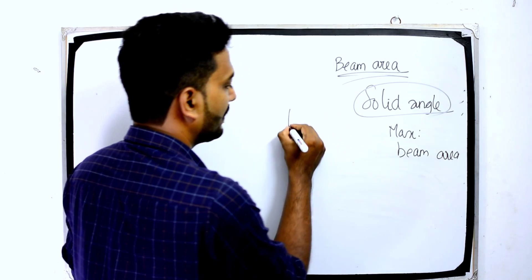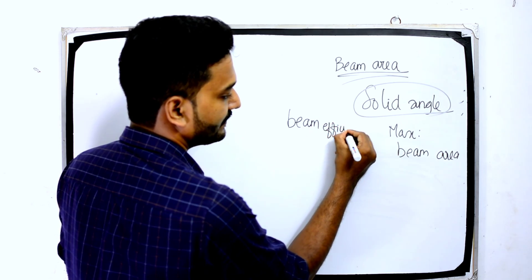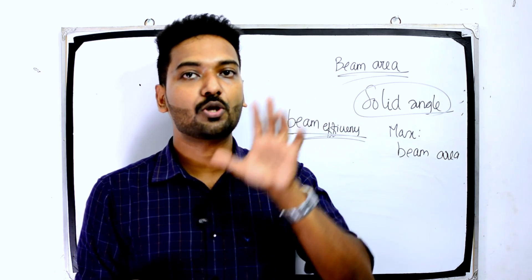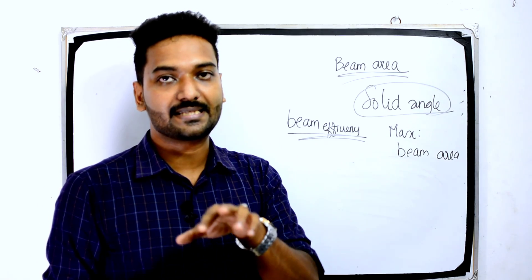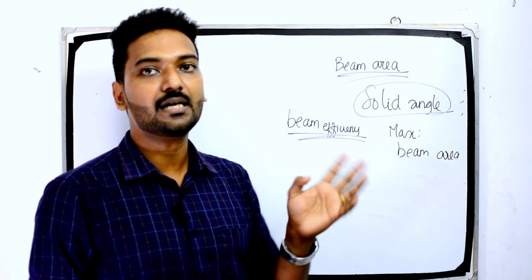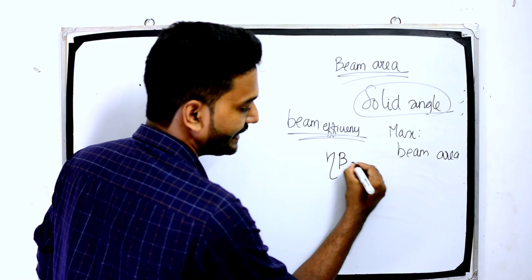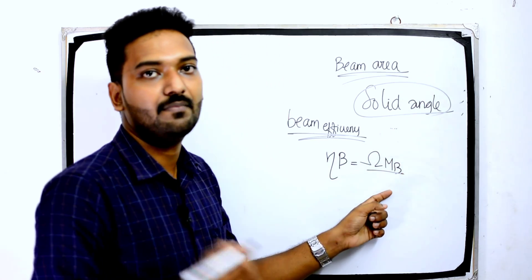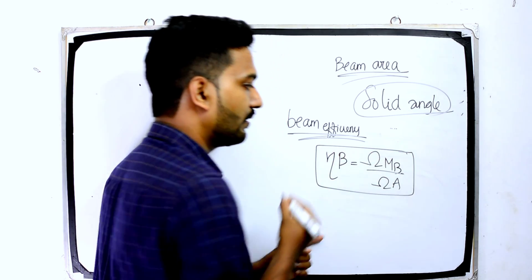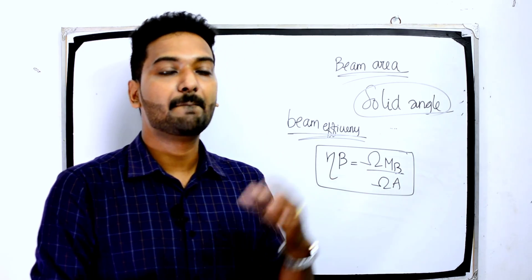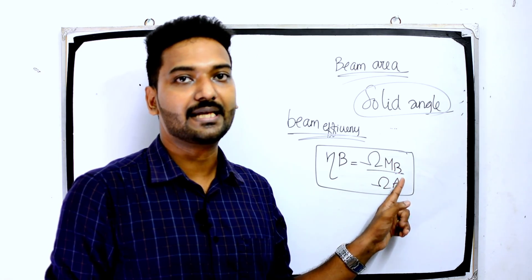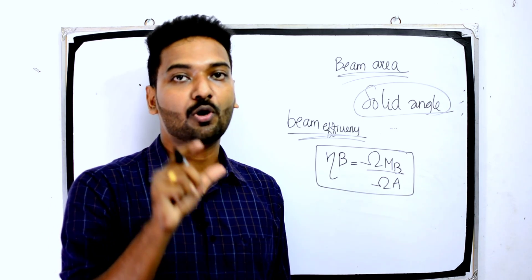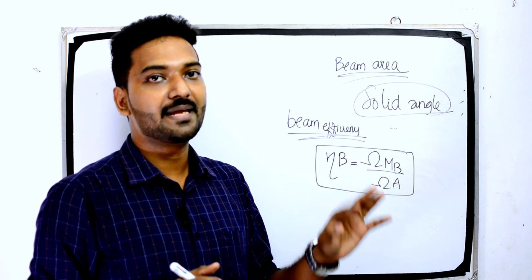The next terminology is beam efficiency. Beam efficiency is the ratio of the beam area of the main beam to the total beam area radiated. The formula is: beam efficiency (ηMB) is equal to ΩMB divided by ΩA, where ΩA is the total solid beam angle or beam area.